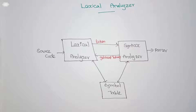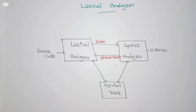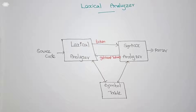In this video we are going to discuss the role of the lexical analyzer. The lexical analyzer is the first phase of a compiler. It reads the source program character by character until a meaningful token is formed. For example, whenever it reads a keyword it recognizes it as a keyword, and when it reads an identifier or variable it recognizes it as an identifier. So the input is source code and the output is a token.